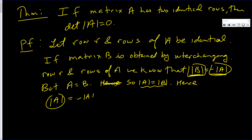Now these are real numbers. And this fact has been coming up a lot in my videos: if two real numbers are equal and they differ by a sign, then they must be zero. Therefore, the determinant of A is zero. If you have two rows that are identical, the determinant of that matrix must be zero.